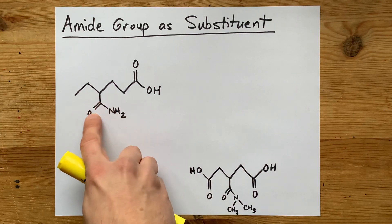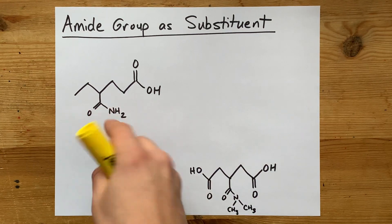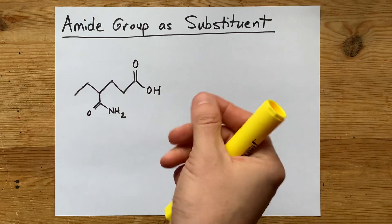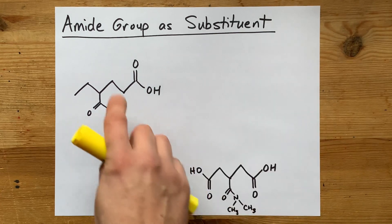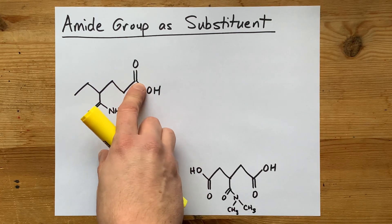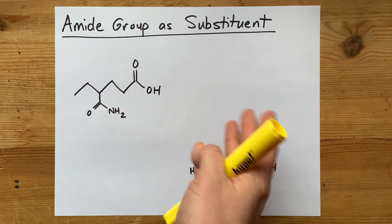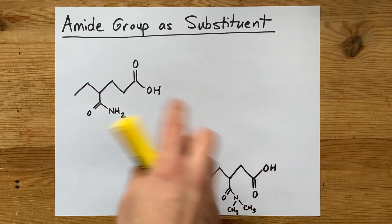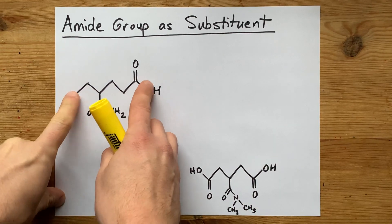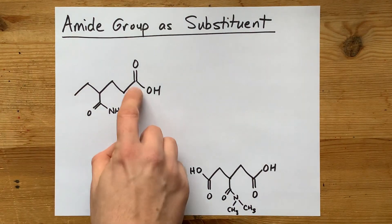This here is an amide bond, which is a high-priority group in organic naming, but carboxylic acids outrank it. This here needs to be named as a carboxylic acid.